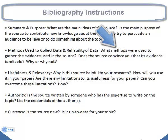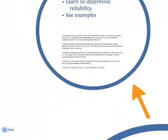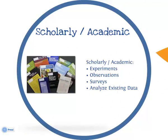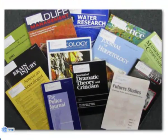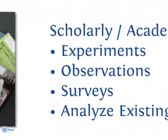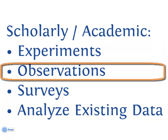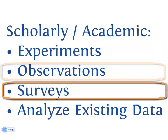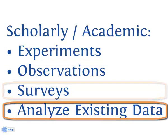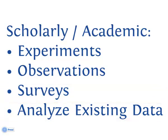Methods refers to how the author of your article, book, or website compiled the information. Reliability refers to the accuracy and trustworthiness of that information. Some sources, such as many scholarly journal articles, are original research. The authors may have collected their own data via scientific experiments, observations, or surveys. They may also use data collected by other researchers and analyze it in a new way.